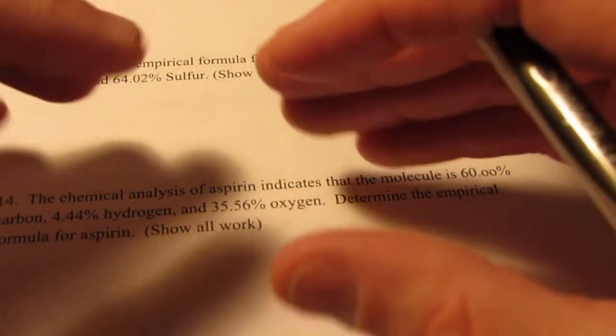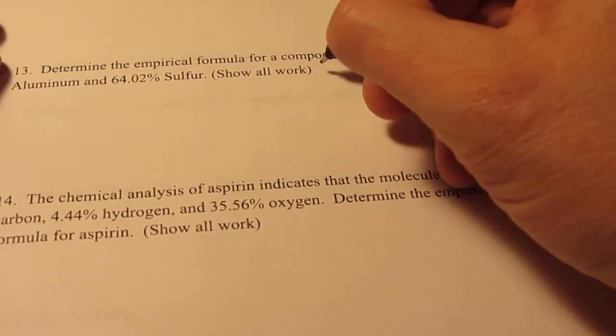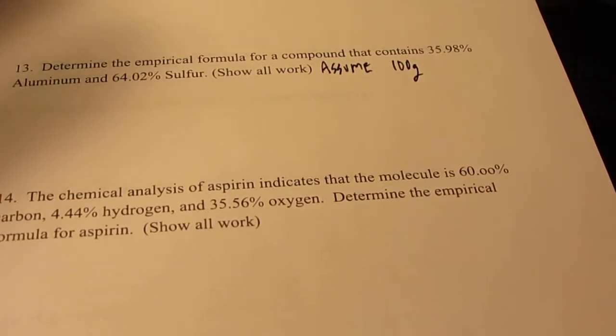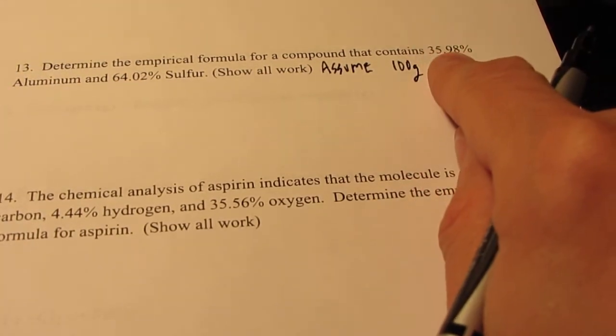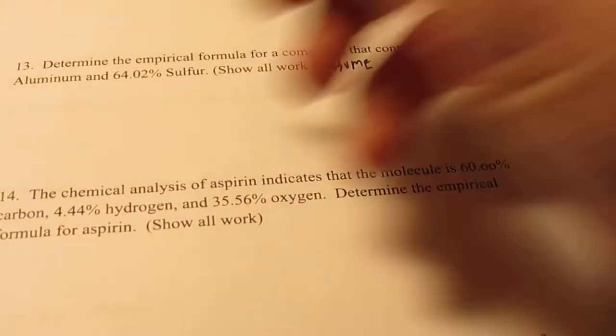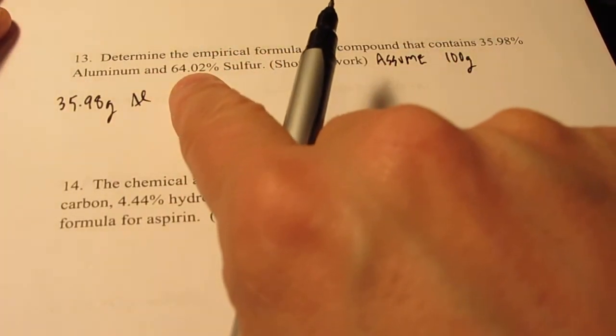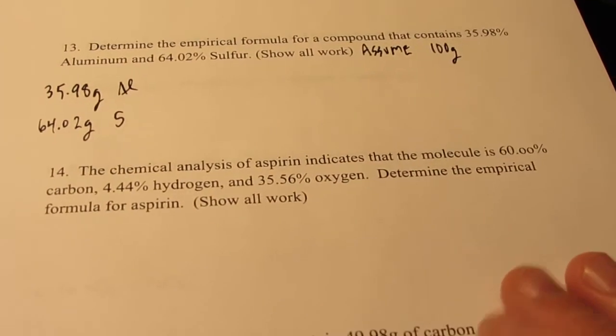Okay, so we're going to do some empirical formulas to start out with. Remember, empirical formula is the lowest whole number mole ratio. So I'm giving you percent by weight for this first problem and that doesn't help us out too much. So remember when I give you percent by weight, we assume we have 100 grams of this compound. Now, the only reason I assume 100 grams is because it makes the first step of the math easy.